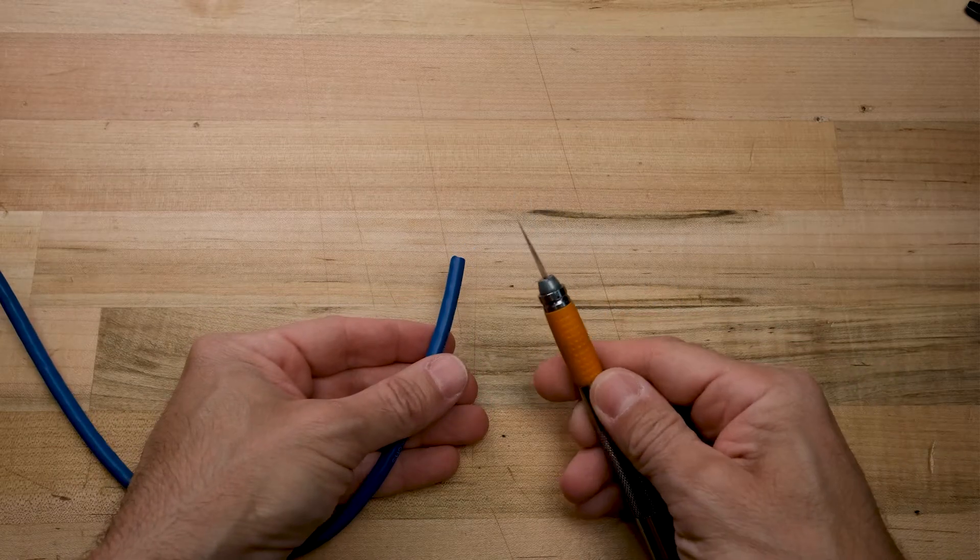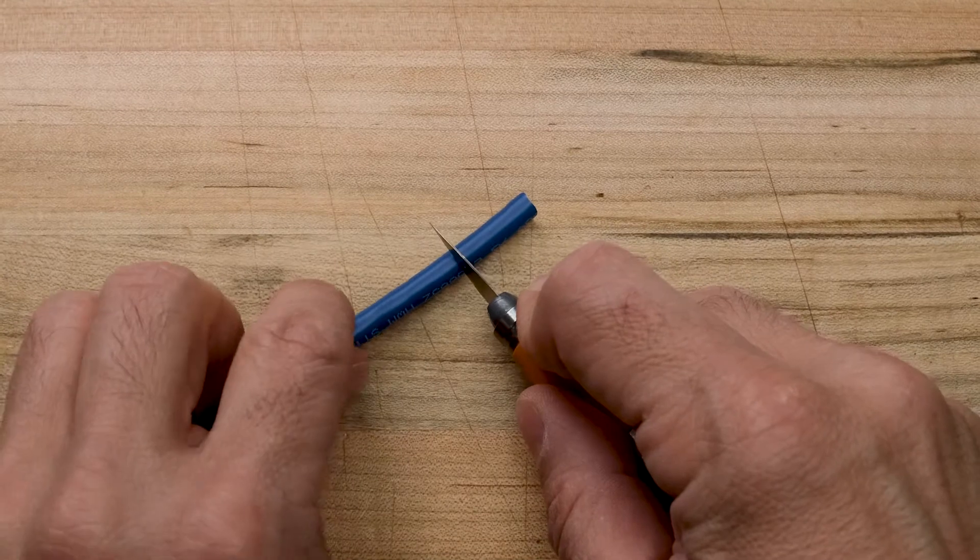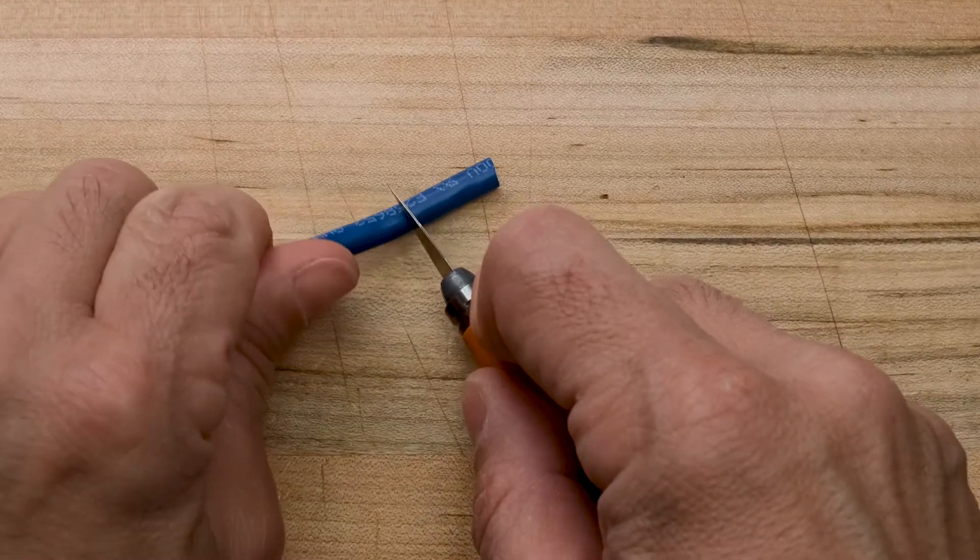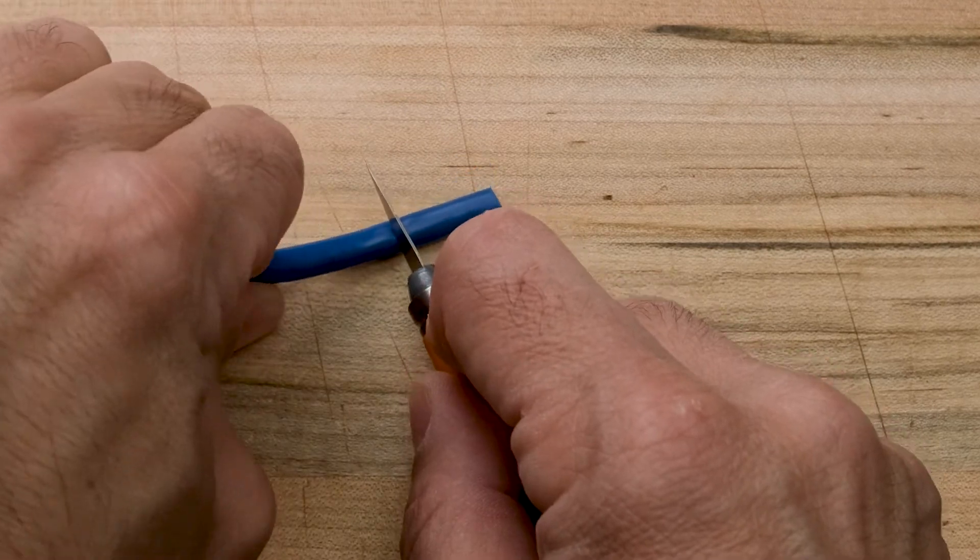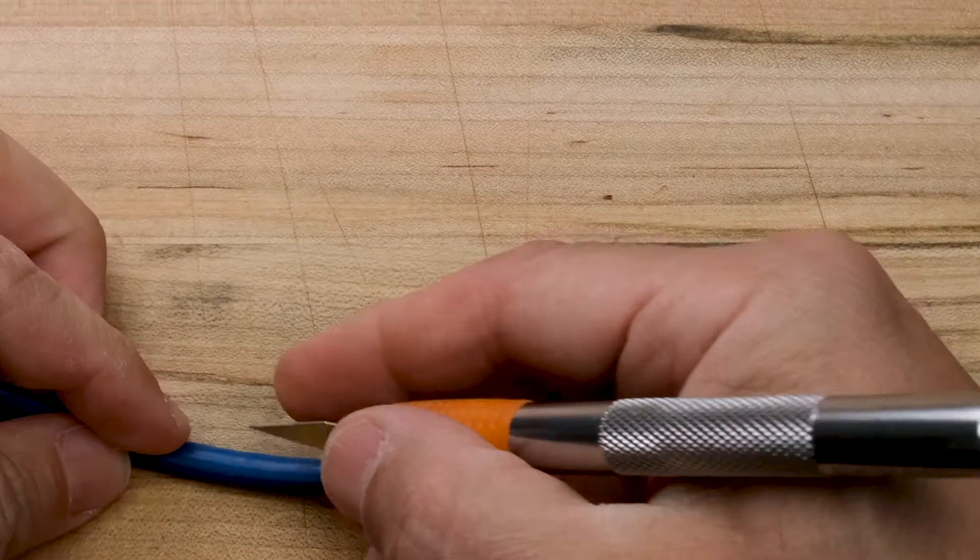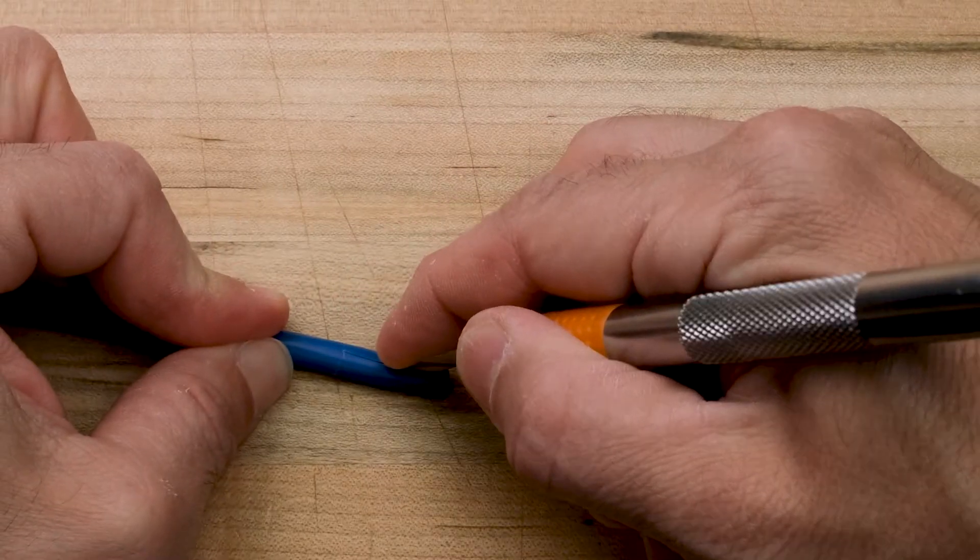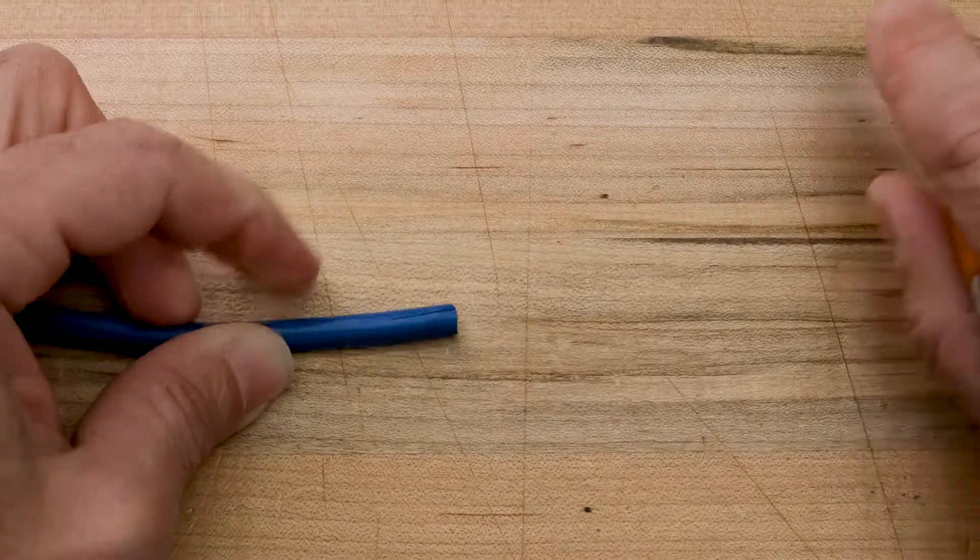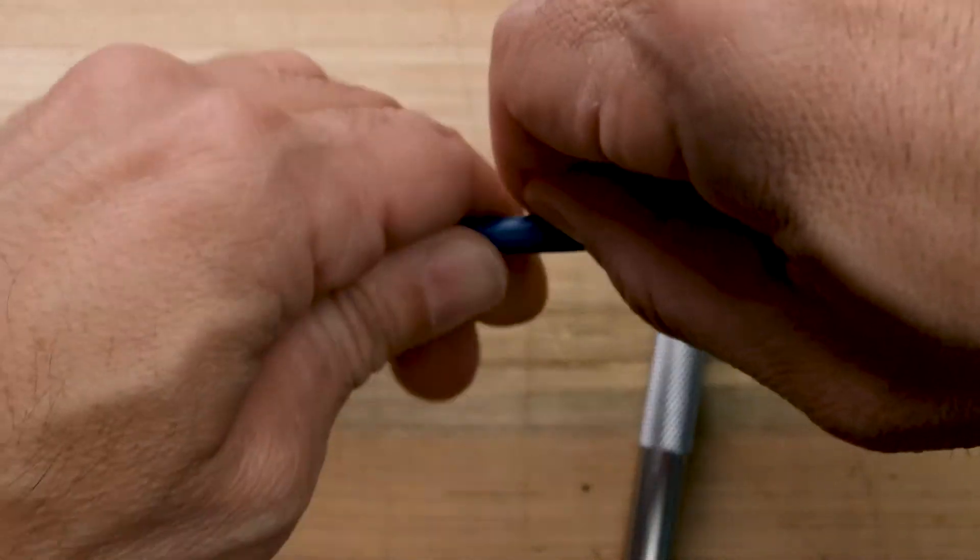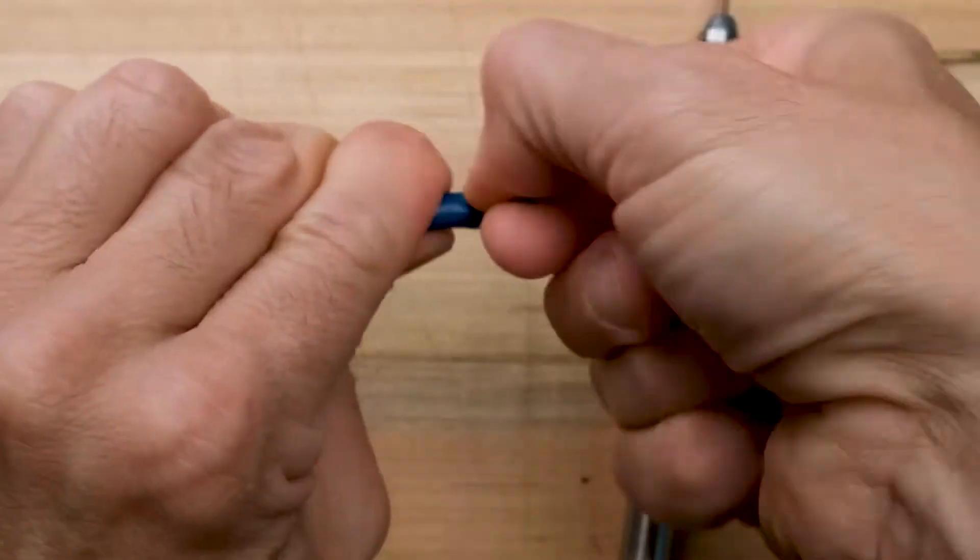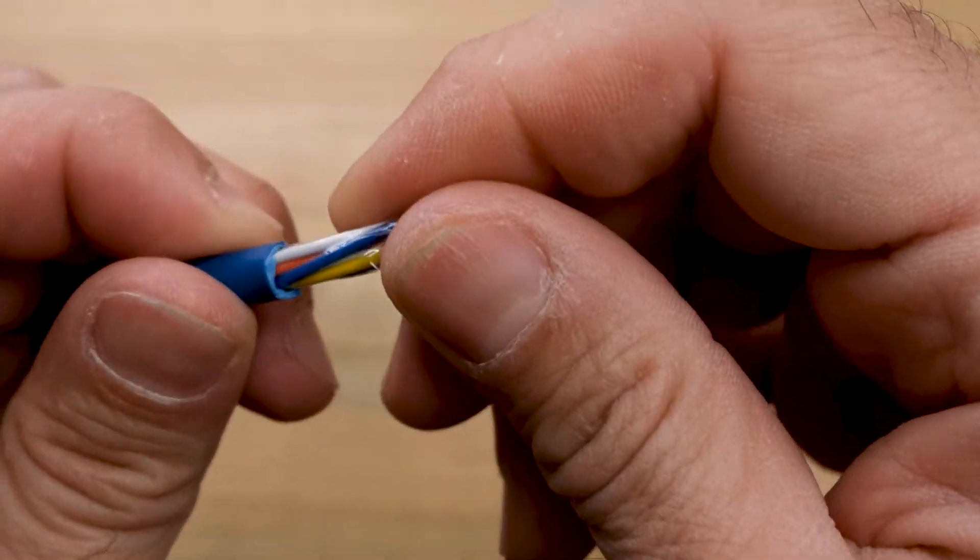So the way I normally do this is I take an exacto knife and you try to just kind of score all the way around, just through the outer jacket, not nicking any of the wires underneath. It takes a fair amount of practice to do this so that you get all the way through the jacket but don't nick the wires. Then you do a longitudinal cut, use your finger as a guide so you don't cut too deep. You just want to get through the jacket and peel it off. And I think we did okay on this one. It's just not that easy to do.